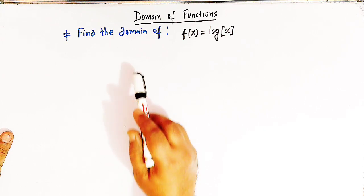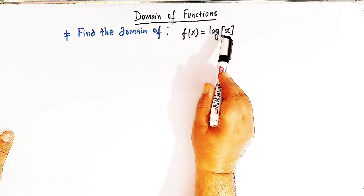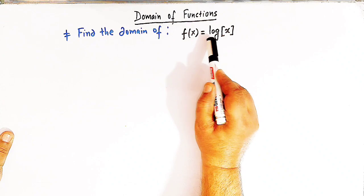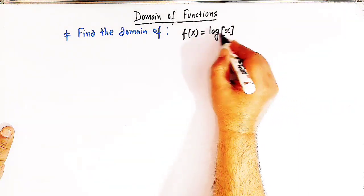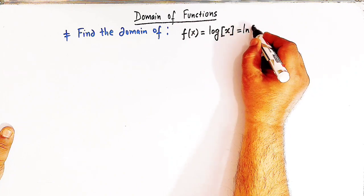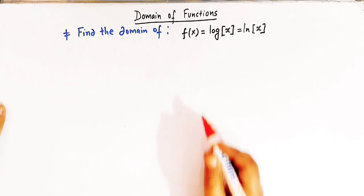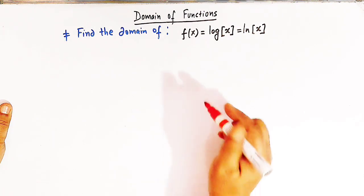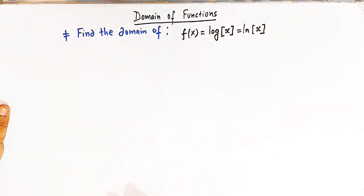In today's session we also discuss another important problem: find the domain of f of x equal to log of greatest integer of x. Here we are using log notation for the natural log, so this can also be written as ln of greatest integer of x. To get the domain, we will make use of the definition of the greatest integer function and draw some important conclusions.